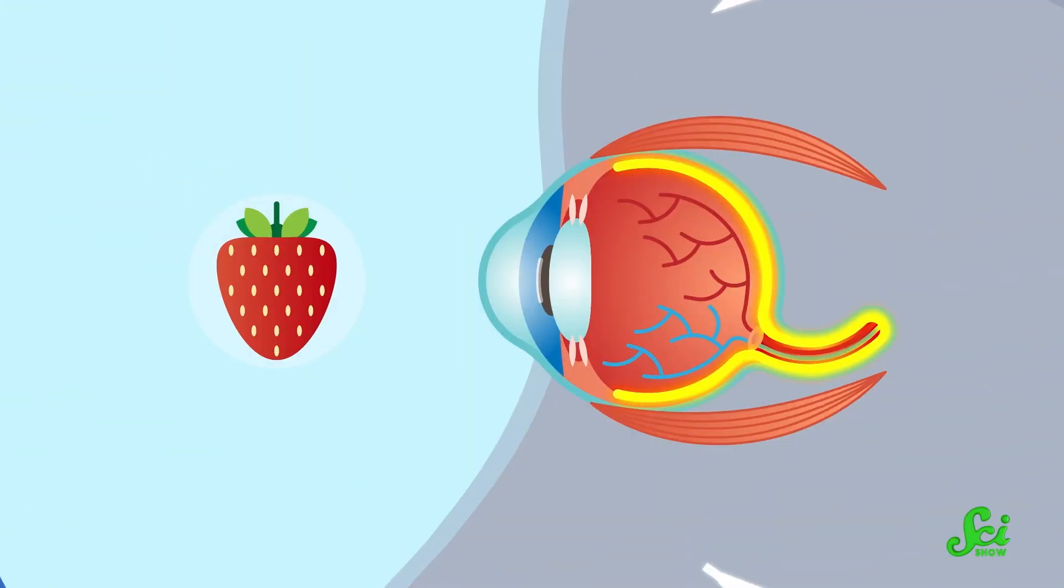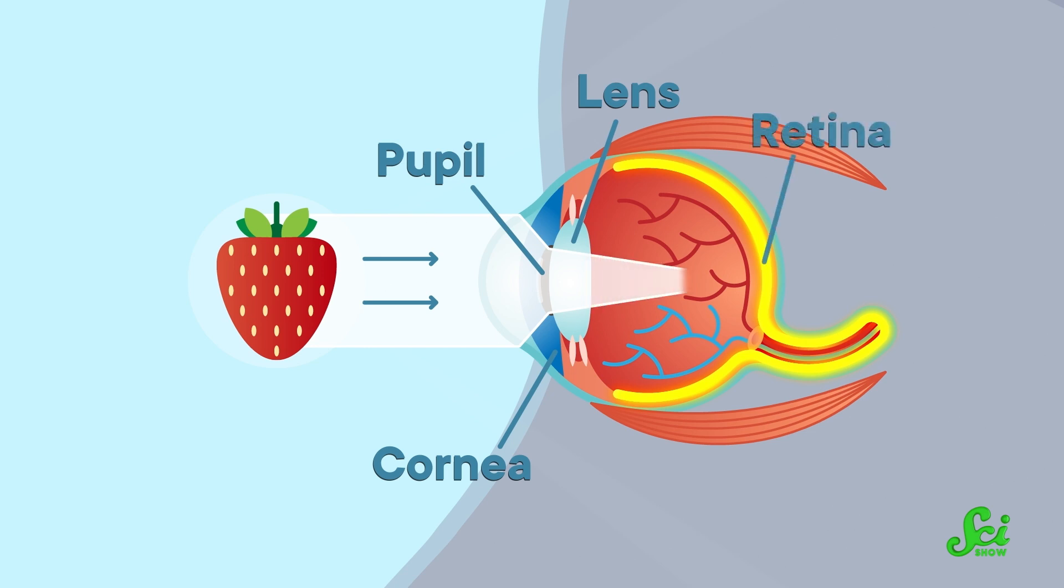But before we can start seeing the invisible, let's talk about how seeing the regular visible stuff works. When light bounces off an object and enters our eye, it passes through the cornea first. That's the outer dome-shaped structure that bends light towards the center of the eye. Some of this light goes through the pupil, which gets bigger or smaller in different settings to let in more or less light. Then this light passes through the lens, a part of the inner eye that helps focus it further. Finally, the light hits the retina at the back of the eye, a layer of tissue covered with special cells called photoreceptors.